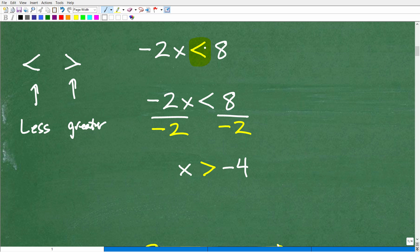So, negative 2x is less than 8. What we want to do is kind of think of this as the equation negative 2x is equal to 8 because the steps we take to solve inequalities are very much like the same steps we use to solve equations.